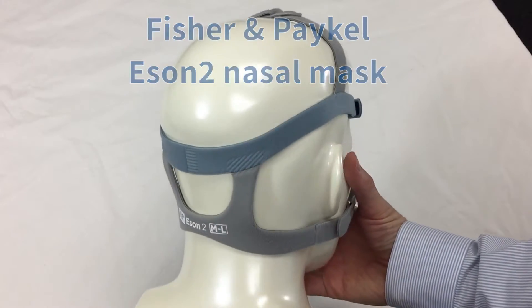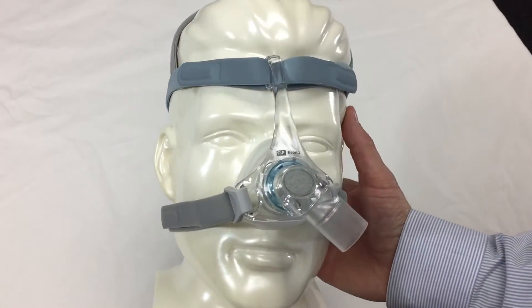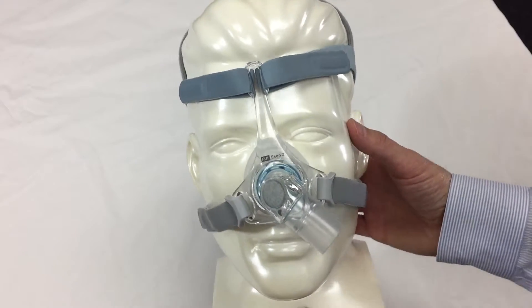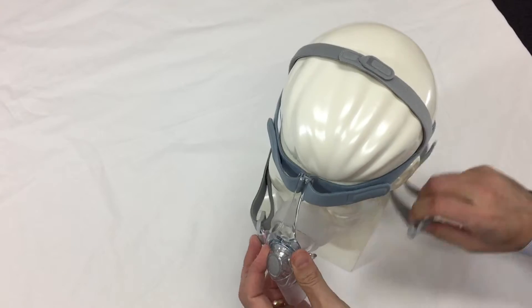This is an improved version on their original, which was just called the Isan, and this one is called the Isan 2. I'll give you a 360 view of the mask, and we'll take that off to give you a closer look.